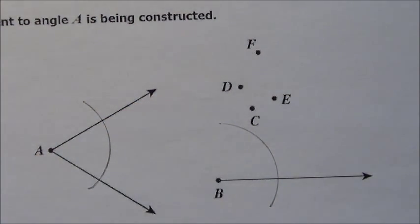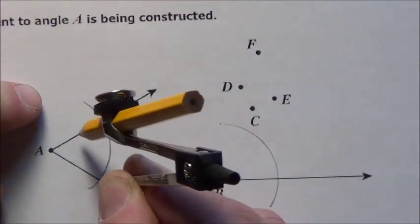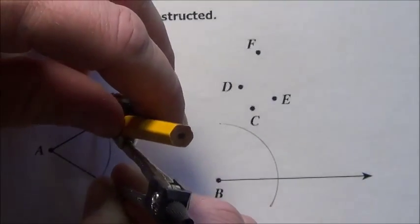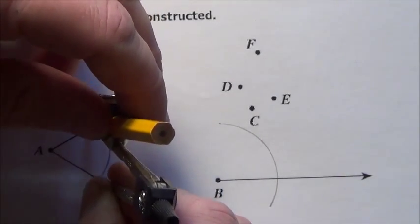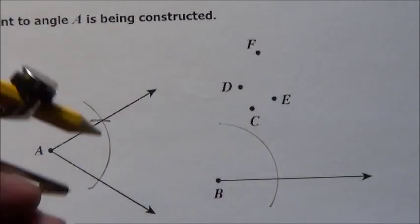Now what I'm going to do is use these as a measuring tool from this point right here up to that point right on there where it crosses. It appears I've sort of set the length.